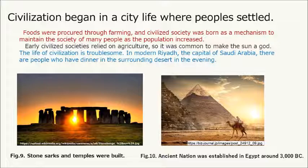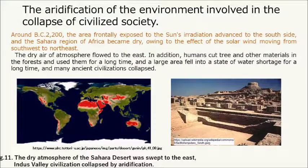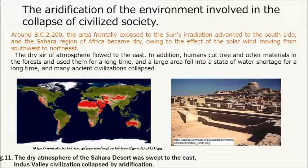Early civilized societies relied on agriculture, so it was common to make the sun a god. The life of civilization can be troublesome — in modern Riyadh, the capital of Saudi Arabia, there are people who dine in the surrounding desert in the evening. Around BC 2200, the area frontally exposed to the sun's irradiation advanced to the south side, and the Sahara region of Africa became dry owing to the effect of the solar wind moving from southwest to northeast. The dry air flowed to the east. In addition, humans cut trees and other materials from forests for a long time, and a large area fell into a state of water shortage, causing many ancient civilizations to collapse.